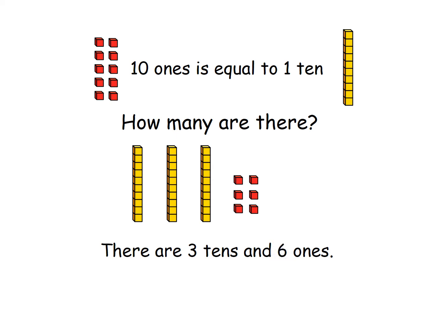Anybody know what three tens and six ones makes? 36. And if you look, you literally put the three and the six next to each other to make your number.